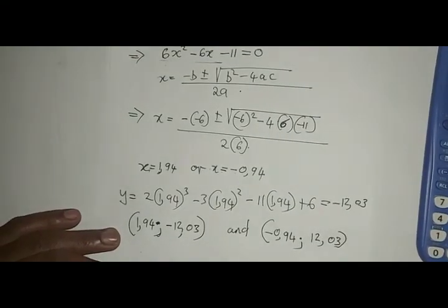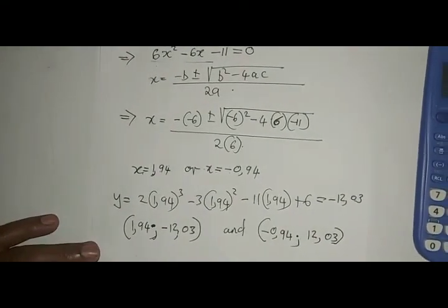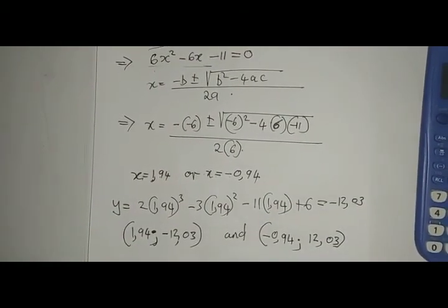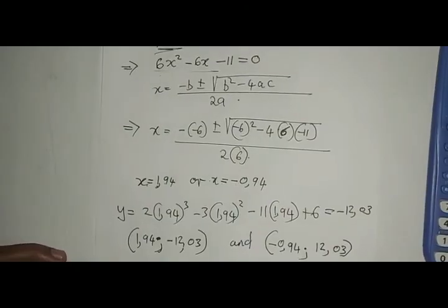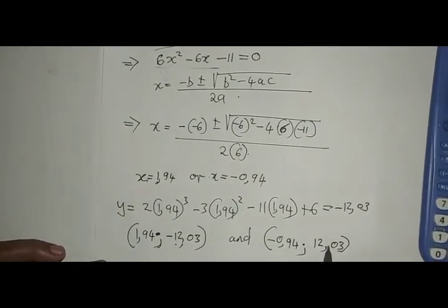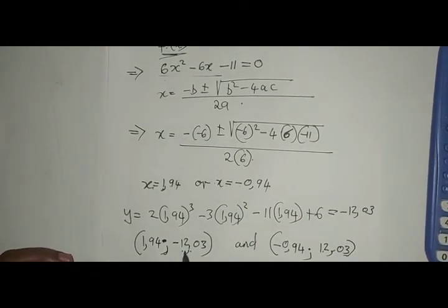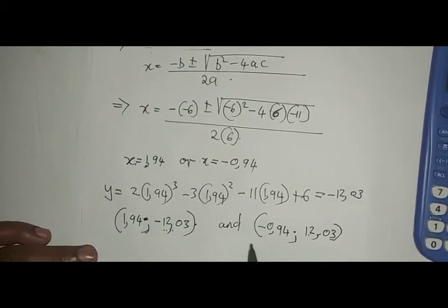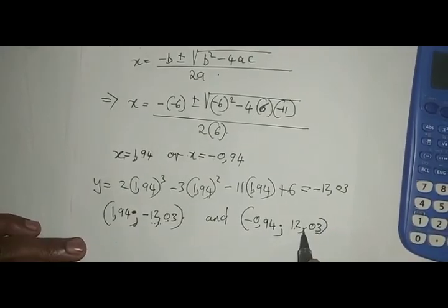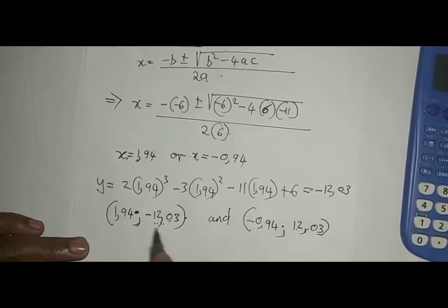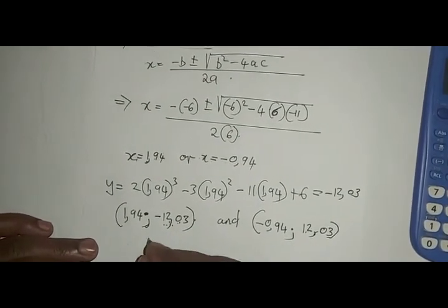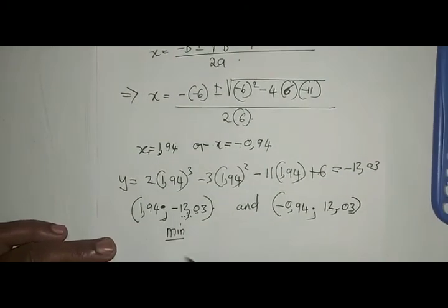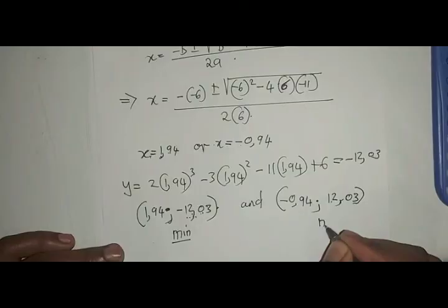That's how you find the two turning points. Then we now need to distinguish the two turning points to know which one is which. Here, look, you compare your y-coordinates. This one has a smaller y-coordinate, -12.03. This is 12.03, so this is bigger and this is smaller. Therefore, it means this one will be a minimum turning point and this one will be a maximum turning point.